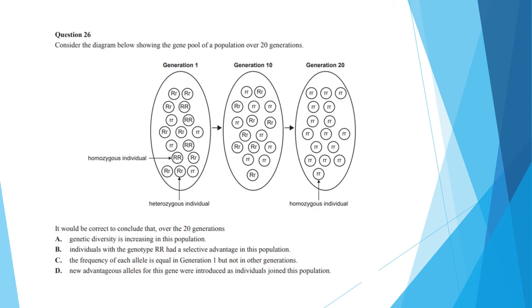Question 26 shows the gene pool of a population over 20 generations. In generation one, there are homozygous individuals with two big Rs, those with two little Rs, and heterozygous individuals with one big R and one little R. At a glance, it appears as though there is a random scatter of the three. The most obvious feature is that by generation 20, it is all homozygous individuals with two little Rs. The question asks, which of the following statements are correct? Option A is clearly incorrect as genetic diversity is decreasing. B is also incorrect as individuals with two big Rs are wiped out of the population. C is the correct one as the frequency of each allele were equal in generation one, but not true for subsequent generations. And D is incorrect because there is no new alleles that were introduced into this population pool.